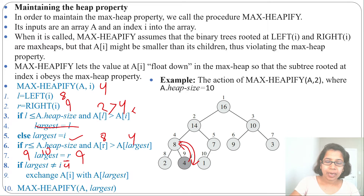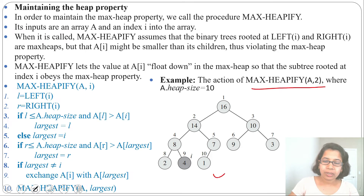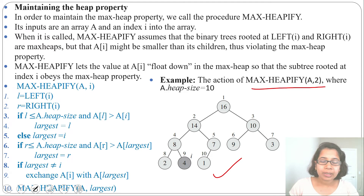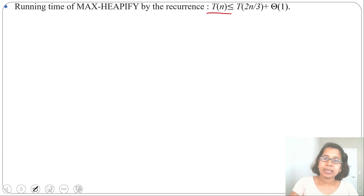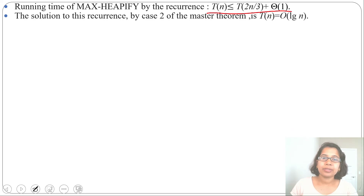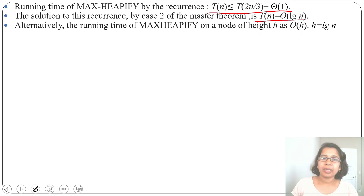Next we would call max heapify on A[9], but since it has no children we cannot compare left or right child, so we stop — it is a leaf. After max heapify A[2] we now have a valid max heap where every node value is greater than its children. The running time of max heapify can be at most the height of the tree, which is log n, so max heapify runs in O(log n). Its recurrence is T(n) ≤ T(2n/3) + Θ(1), and by Master Theorem case 2 we get O(log n).